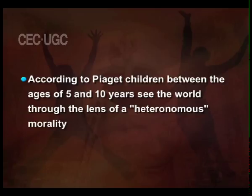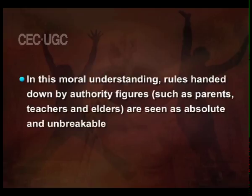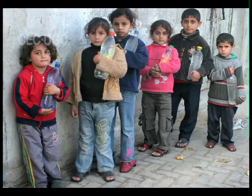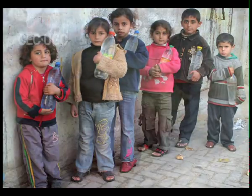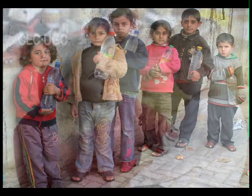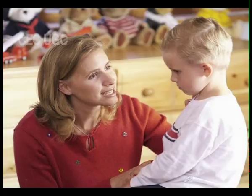According to Piaget, children between the ages of 5 and 10 years see the world through the lens of a heteronomous morality. In this moral understanding, rules handed down by authority figures such as parents, teachers and elders are seen as absolute and unbreakable. Children accept that elders are able to make rules that last forever, that they do not change and must be followed. For most children, breaking the rules tends to lead to negative personal consequences and most children follow the rules as a way to avoid being punished.